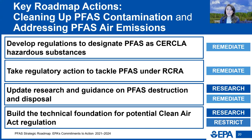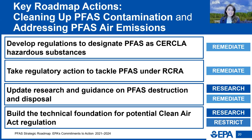Under the Resource Conservation and Recovery Act, or RCRA, EPA plans to propose two regulations in 2023. First, EPA plans to develop a proposed rule to add specific PFAS to the list of hazardous constituents, which would make them subject to RCRA corrective action requirements. Second, EPA plans to clarify that emerging contaminants such as PFAS can be cleaned up through the RCRA corrective actions process. EPA is also committed to updating research and guidance on PFAS destruction and disposal. EPA published interim guidance in December 2020 and has a deadline to update that guidance by December 2023.